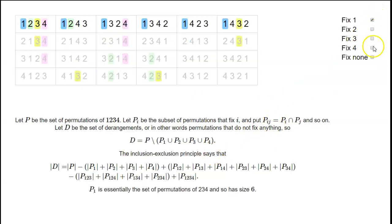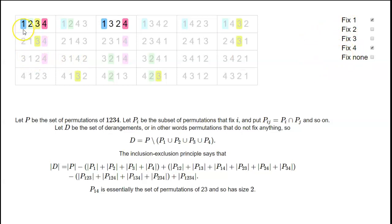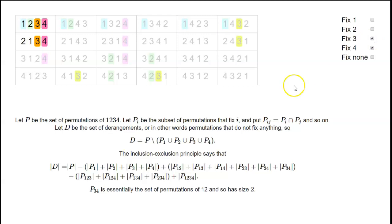What if we look at the intersection of two of these sets — say, permutations that fix 1 and also fix 4? There are just two of these. You fix 1 and 4, and then 2 and 3 you can permute in 2 factorial = 2 ways. So P_{1,4} has size 2, and similarly all the P_{i,j} have size 2.